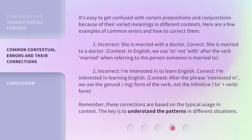It's easy to get confused with certain prepositions and conjunctions because of their varied meanings in different contexts. Here are a few examples of common errors and how to correct them. First: Incorrect — 'She is married with a doctor.' Correct — 'She is married to a doctor.' In English, we use 'to,' not 'with,' after the verb 'married' when referring to the person someone is married to.